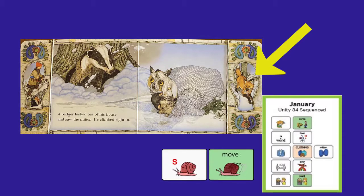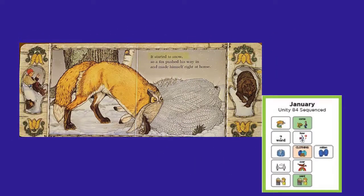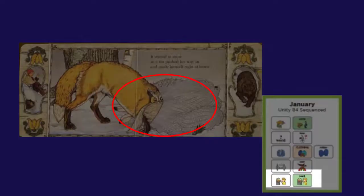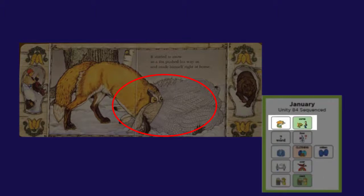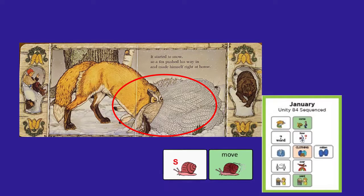I see a fox. What do you think will happen if he tries to get in the mitten? It started to snow, so a fox pushed his way in and made himself right at home. That fox is thinking, I want in. I wonder if the other animals are saying, don't come in — the mitten is too crowded, we can't move over.